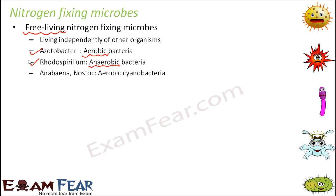Anabaena and Nostoc are examples of aerobic cyanobacteria that can fix nitrogen. Cyanobacteria are nothing but the blue-green algae, as we discussed when we learned about diversity in living organisms.